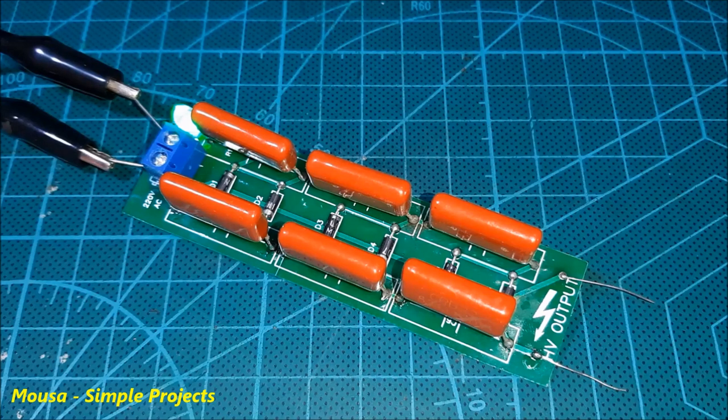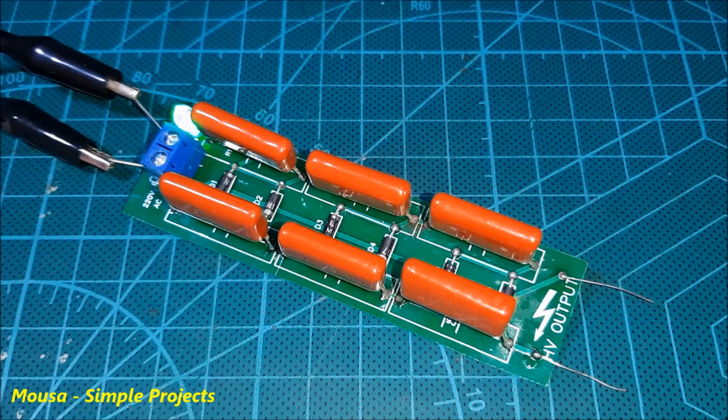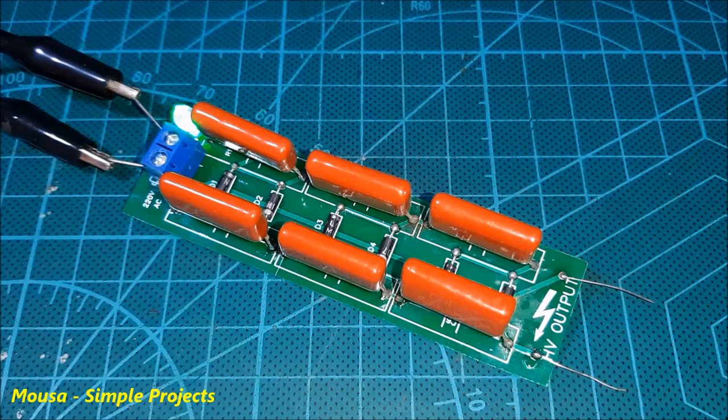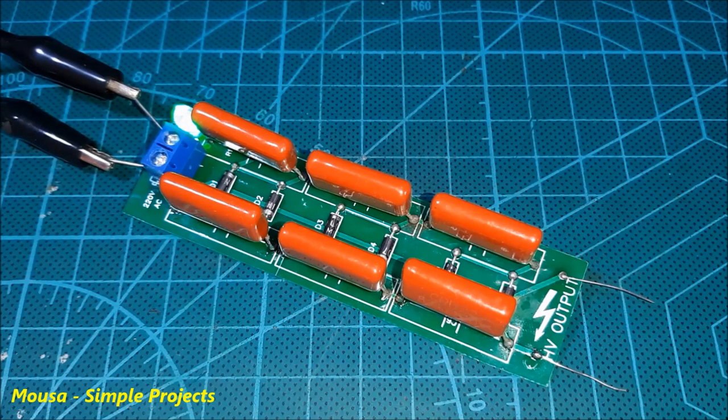Hey guys, in this video I want to show you how to make a voltage multiplier that generates high voltage. This voltage multiplier converts the 220 volt AC voltage in the input to 1800 volts in the output, so it can be used for fly or bug zapper and even for ozone generator.